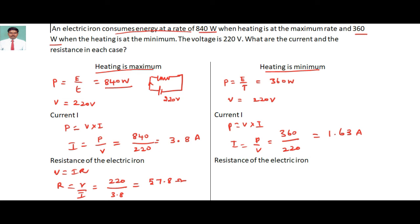Similarly, for the second case, R equals V divided by I, where the voltage is 220 volts and the current is 1.63 amperes. Dividing gives a resistance of 134.9 ohms.